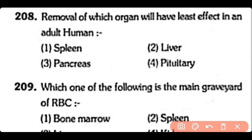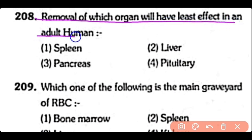Q208. Removal of which organ will have the least effect in an adult human — spleen, liver, pancreas, or pituitary?